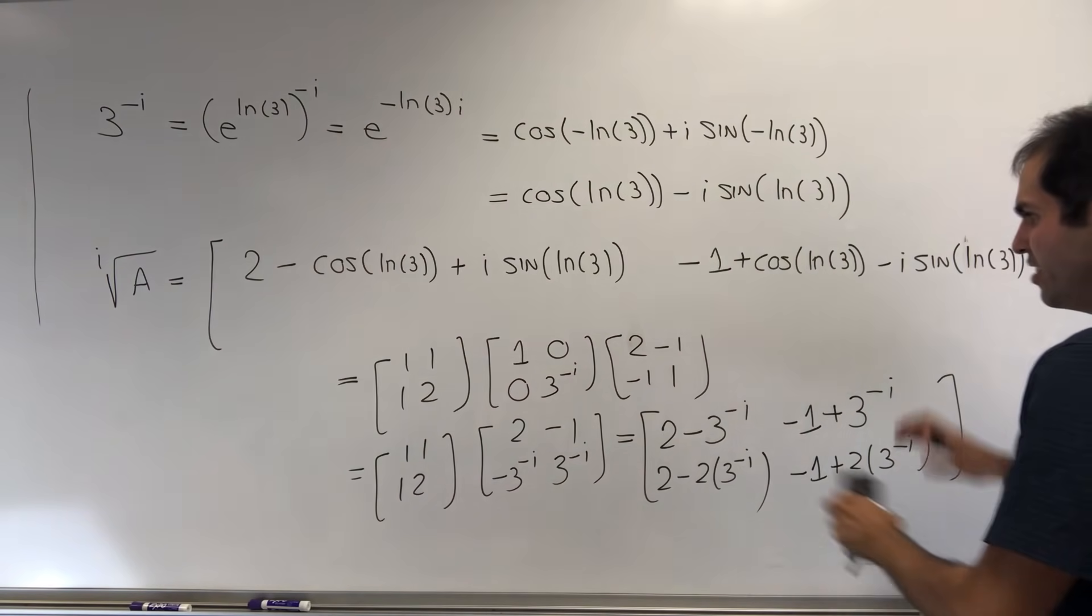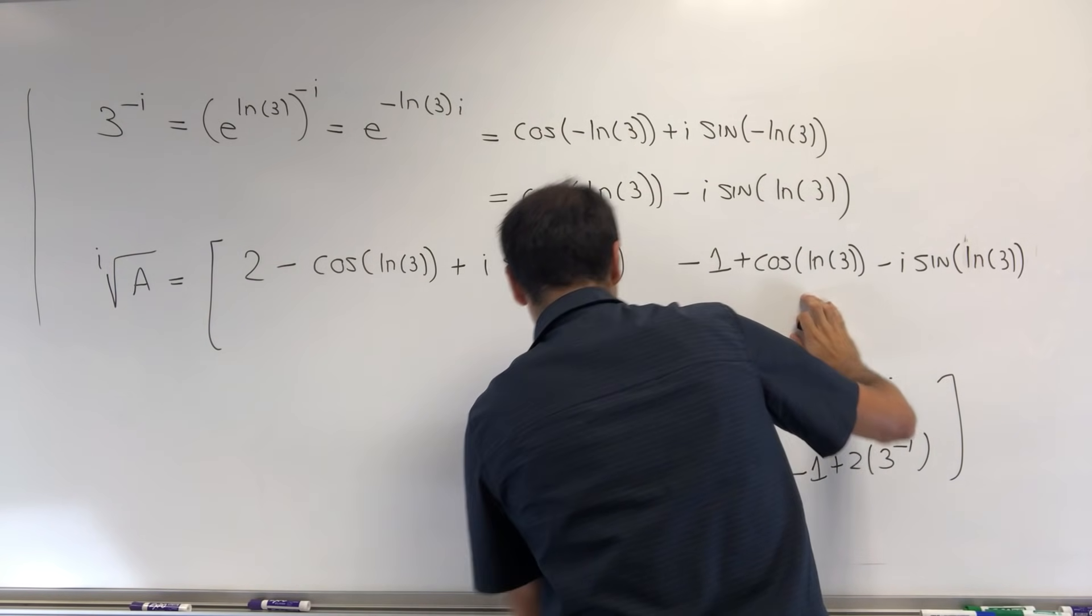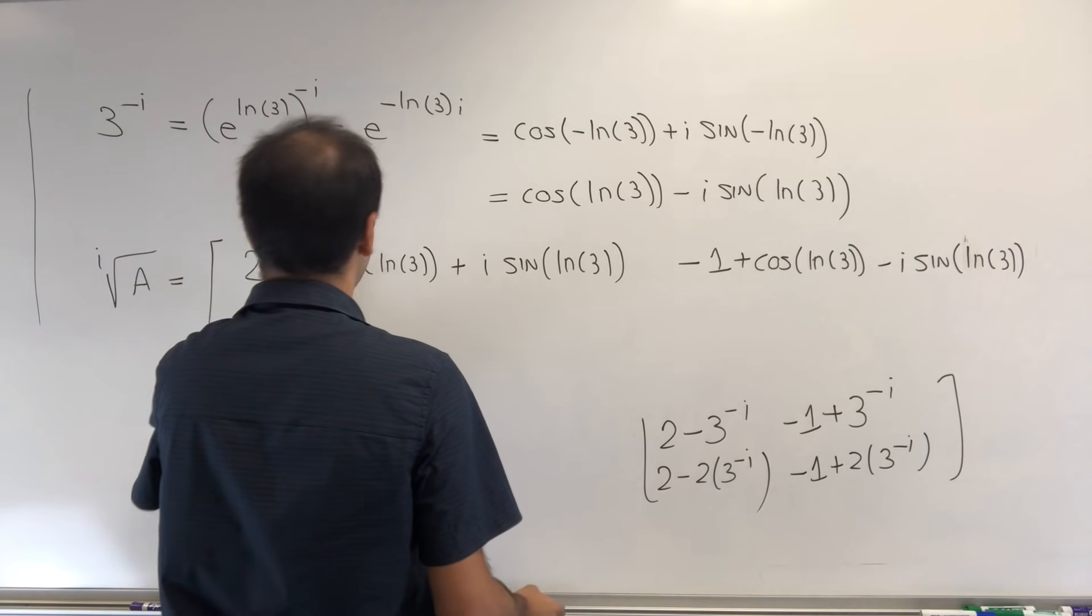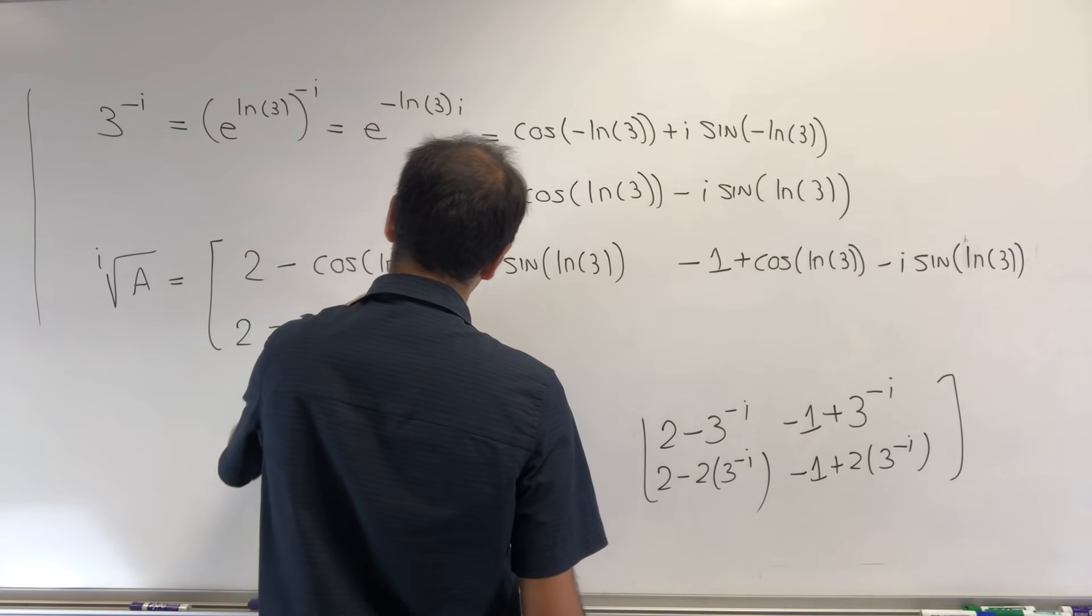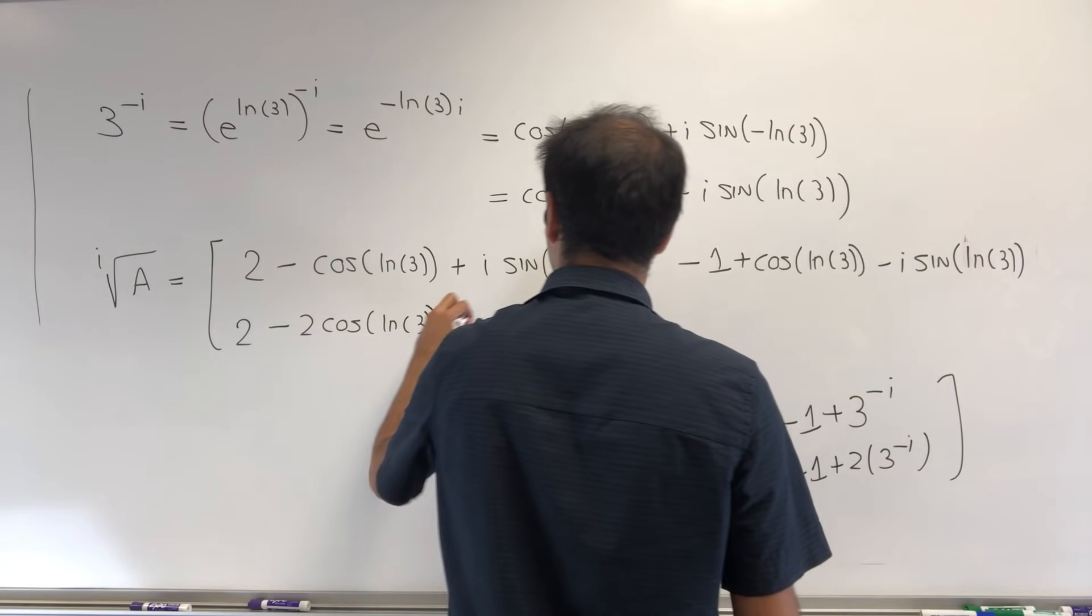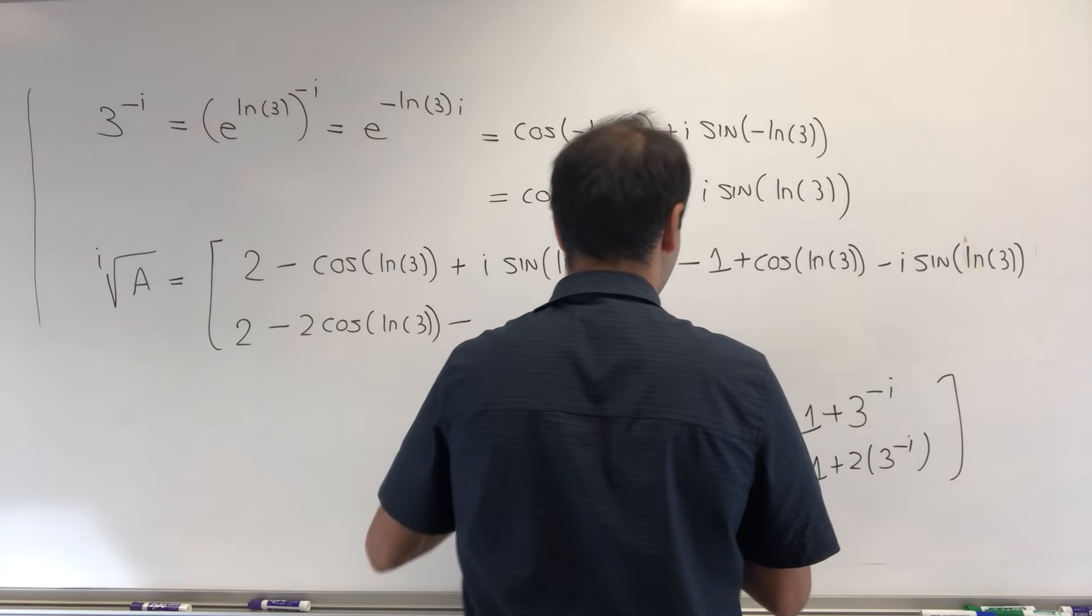And then let's continue. So 2 - 2·cos(ln(3)) - 2i·sin(ln(3)), or if you want, plus i times 2·sin(ln(3)).